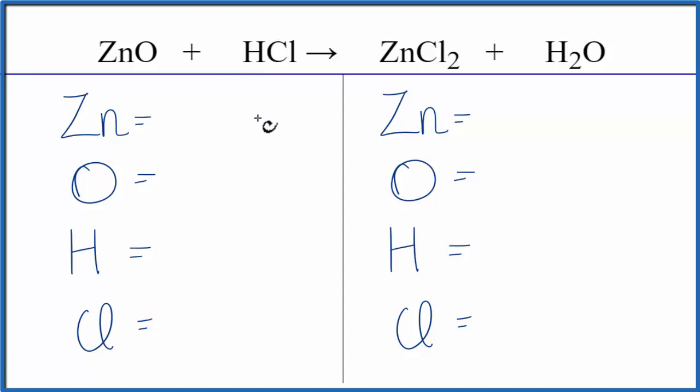Let's count the atoms up on each side of the equation. One zinc and one oxygen, one hydrogen and one chlorine.